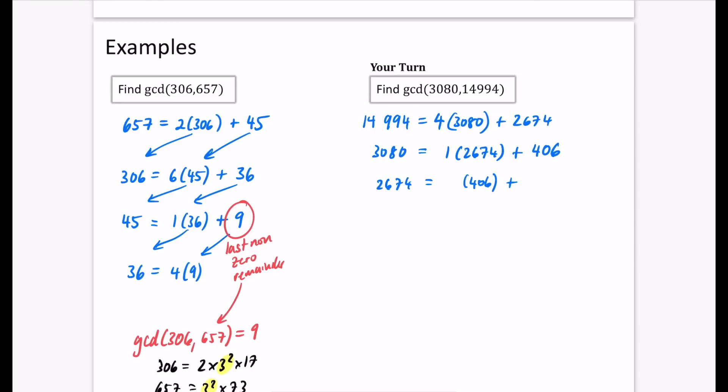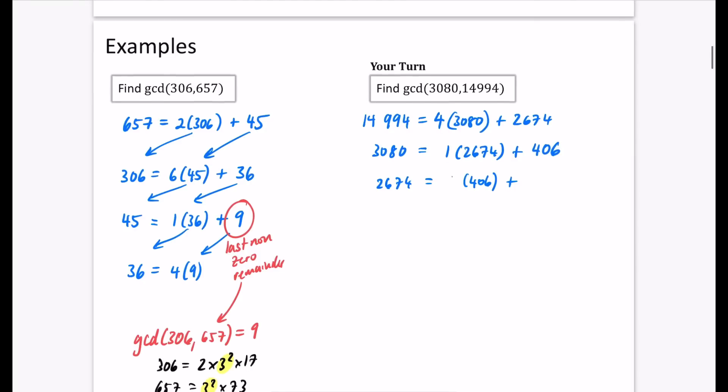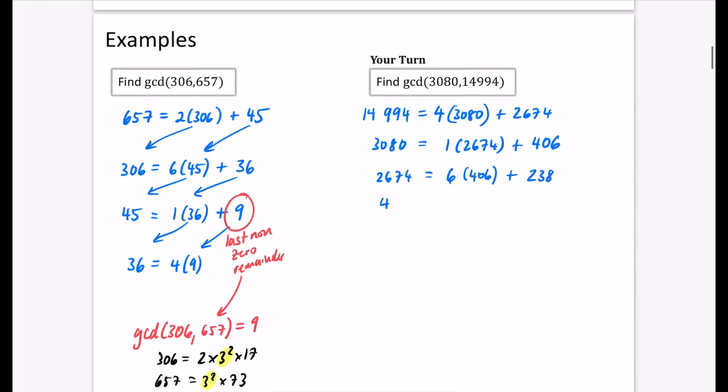So we then get the 2674. We'll find out how many lots of 406 this is, and then come up with a remainder. 2674 divided by 406. Well, it is six point something. So it's six lots of 406. 2674 minus that answer. The remainder is 238. So we put the 406. That's clearly just one lot of 238. So I'll see what the remainder is by doing 406, take away 238. And it's 168.